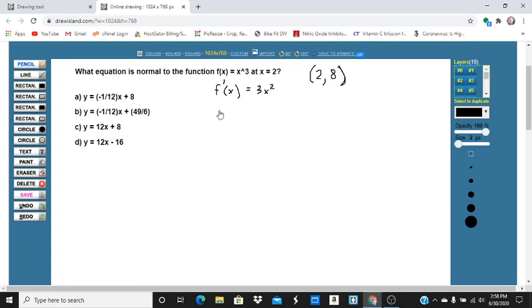Okay, so at x equals 2, the derivative is going to be 3 times 2 squared, sorry, 3 times 2 squared, which is 3 times 4. So the slope of the tangent line is going to be 12.